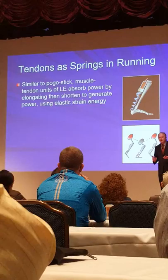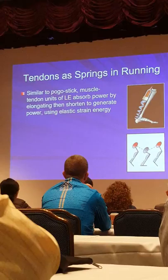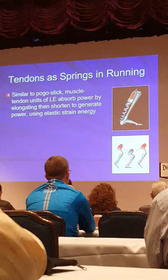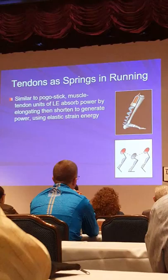Other models used for running's kinetic and potential energy exchange are pogo sticks or bouncing balls — really the same thing. When a bouncing ball hits the ground it compresses, storing elastic strain energy, then releases it and rises up again. Same with a pogo stick: hit the ground, compress the spring, release upward. That's what we do with running.